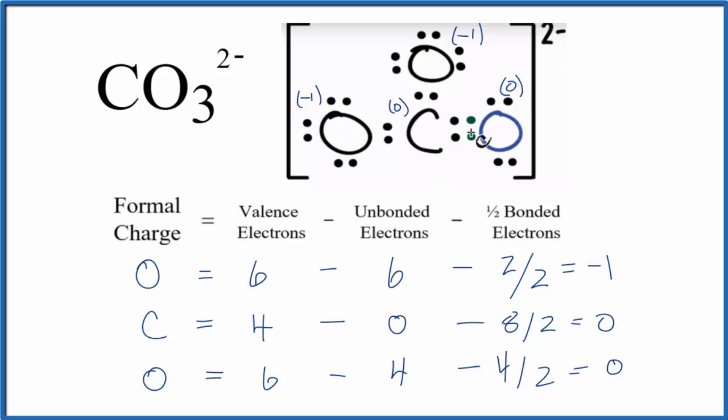If you add up all the formal charges, you get a 2 minus. Not surprising, this is the charge on the ion. Do note that there are resonance structures for this ion. You could have the double bond here instead of here, or you could have the double bond here instead of here. But either way, oxygen with the double bond is going to have a formal charge of 0. Oxygen with the single bonds, they'll be minus 1. This is Dr. B with the formal charges for CO3 2-, the carbonate ion. Thanks for watching.